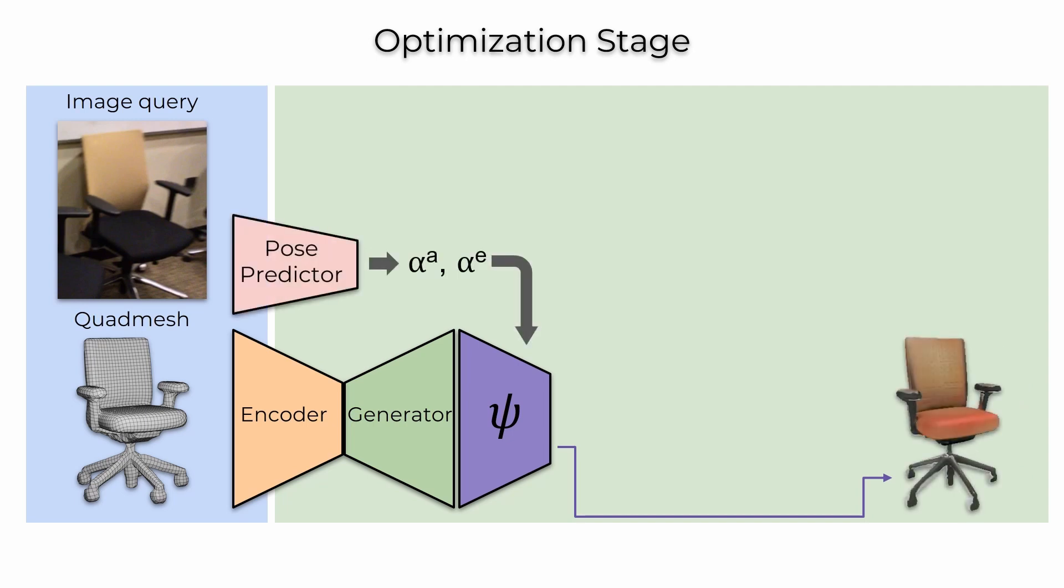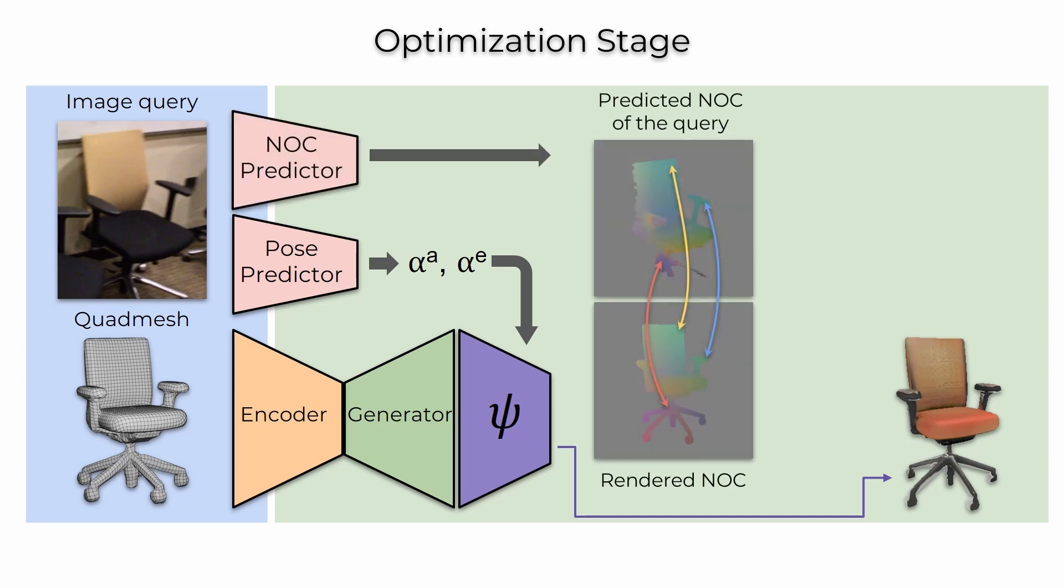From the image query, we estimate the object pose as its azimuth and elevation angles. We then predict the object's normalized object coordinates to provide dense correspondence from the image to the mesh.